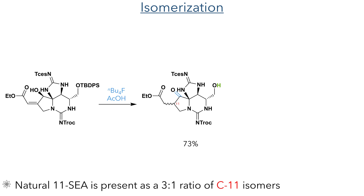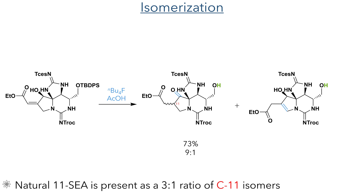With this in place, they could then isomerise it to form the ketone at the C12 position. The group developed reaction conditions that could carry out this isomerisation in the same step as the deprotection of the primary hydroxyl group. This was carried out using tetrabutylammonium fluoride in acetic acid, which produced the product in a 73% yield with a 3:1 ratio of C11 isomers, matching that observed in the natural product. This is due to the highly enolisable nature of this position, which will naturally equilibrate to form this ratio of isomers. In addition, a by-product was also formed where the double bond had isomerised to instead occupy the position between the C10 and C11 carbons.